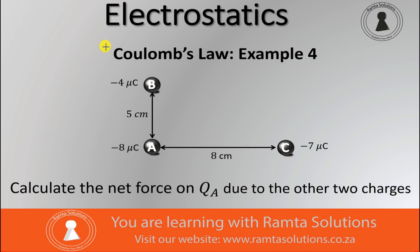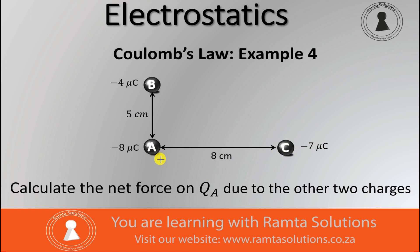Given the information that Q sub A is negative 8 micro coulombs, Q sub B is negative 4 micro coulombs and the distance between them is 5 centimeters. Also, Q sub C is negative 7 micro coulombs and the distance between Q sub C and Q sub A is 8 centimeters. We must find the net force on Q sub A due to these other two charges.